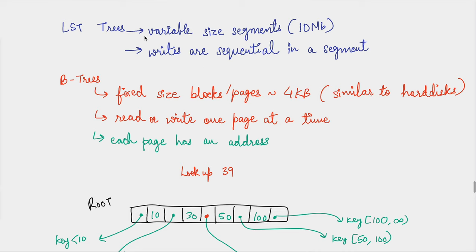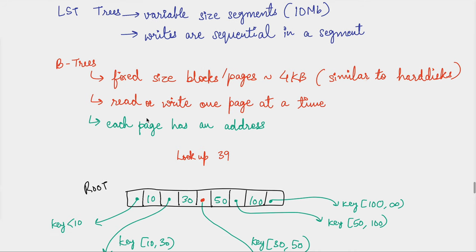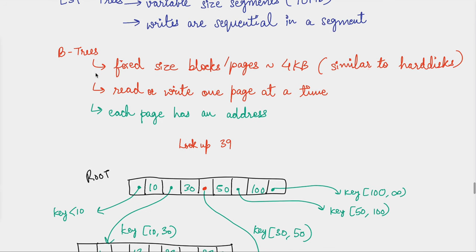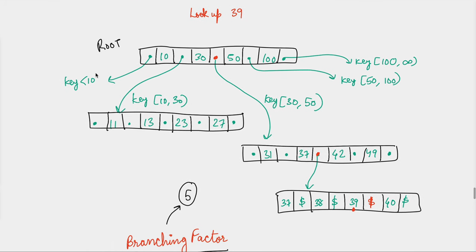These are not sequential writes — sequential writes are very fast on hard disks, which is why LSM trees have really good write throughput. B-trees are not that fast when it comes to writes, and we will come to the analysis and difference between LSM trees and B-trees later in this video. Each page also has an address. B-trees are basically like a binary tree but with more than two branches.